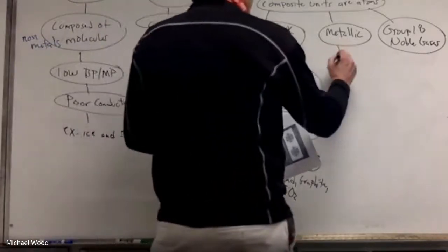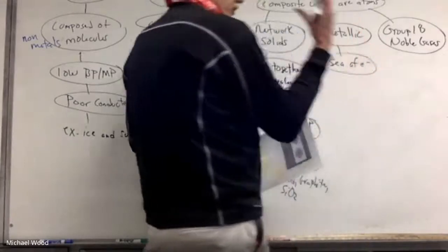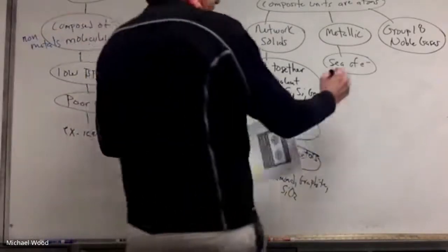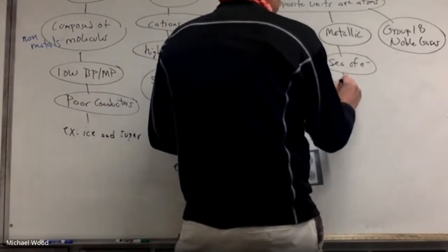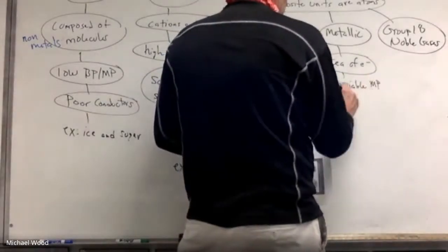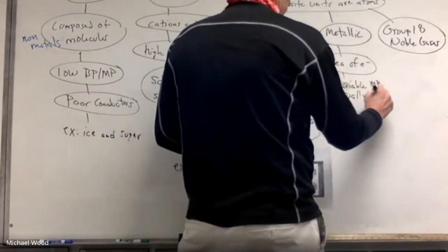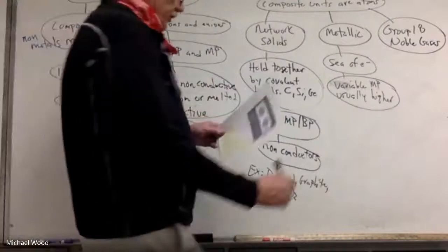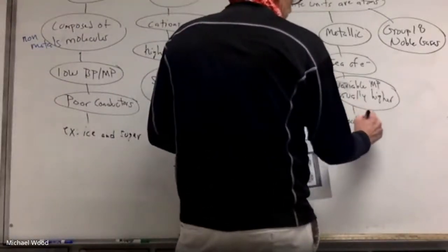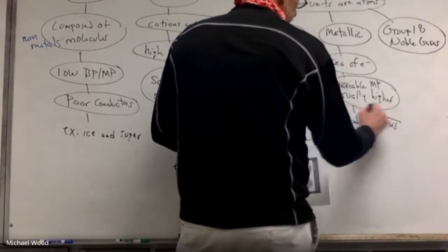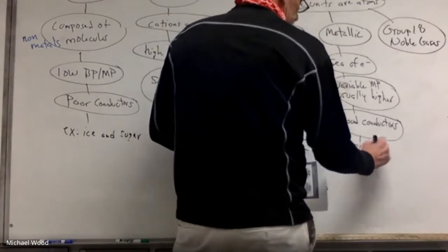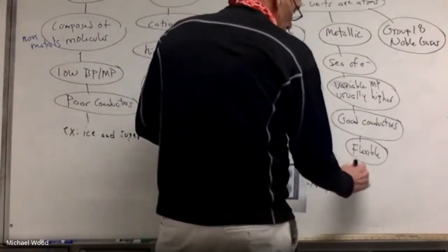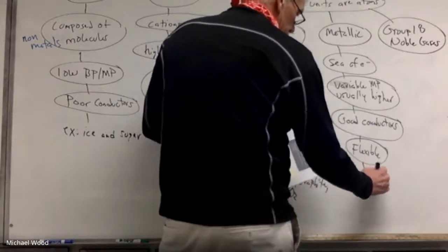Metallic is that sea of electrons, that gel of electrons, that gel of negative that holds everything together. They have a variable melting point, but usually higher. Some melt at a lower temperature than others. They are good conductors because of that sea of electrons. They're flexible because of that sea of electrons. And examples of these would be just any metals, so silver, copper, iron.